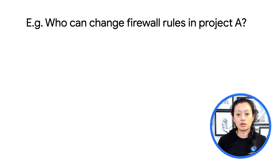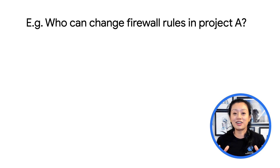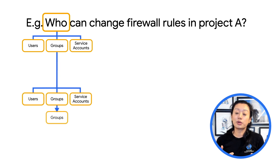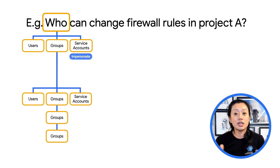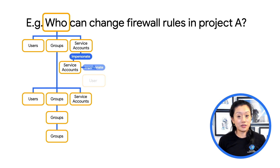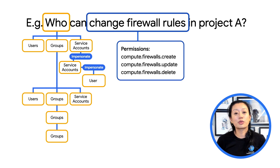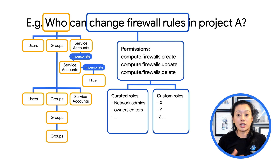Who can change my firewall rules? This is one of the top questions admins need to answer and keep track of. It turns out you have to peel through many layers to actually get to the full picture. Starting from the who part — who can be a user, a group, or even a service account. In the case of a group, there can be multiple layers of groups, which we call nested groups. In the case of a service account, there can also be multiple layers of service accounts that can impersonate one another. Policy Analyzer can handle all of the above to give you a complete picture on the who part. Now, for what's needed to change a firewall rule — three permissions: create, update, or delete — can all make changes to firewalls in some ways. Policy Analyzer is capable of mapping IAM roles to permissions for both curated roles and custom roles.